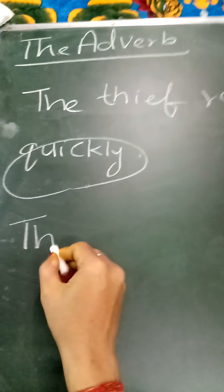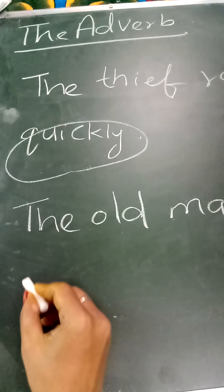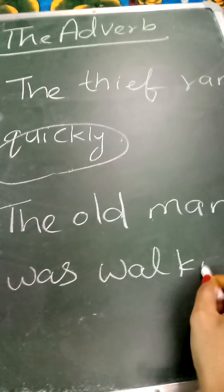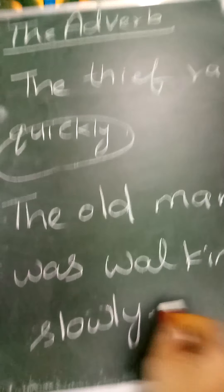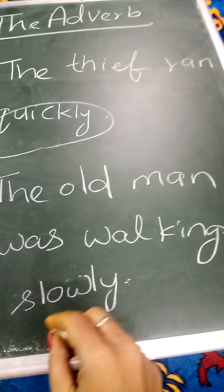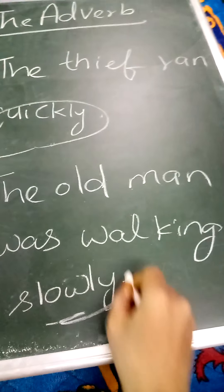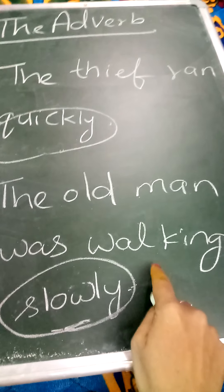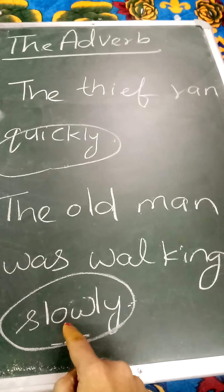Look at one more example. The old man was walking slowly. Ab, yaha pere old man kaisa chal raha hai? Slowly. Yani, dhira dhira chal raha hai. Toh, yaha pere is verb, yani action ko yeh describe kar raha hai — slowly kaisa chal raha hai woh? Dhira dhira. Toh, slowly kya hua? Adverb.